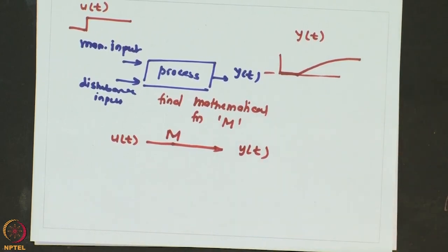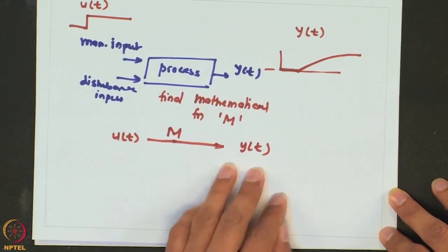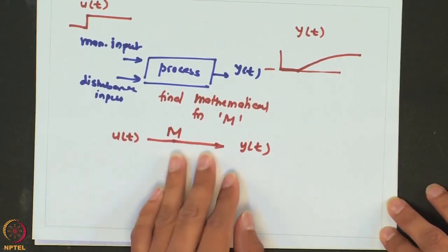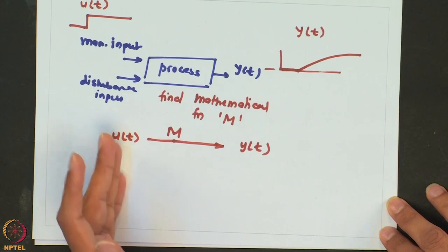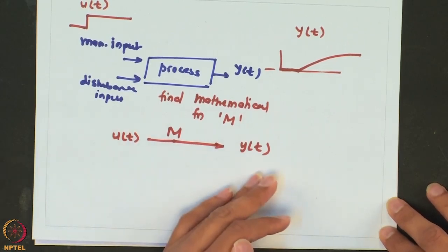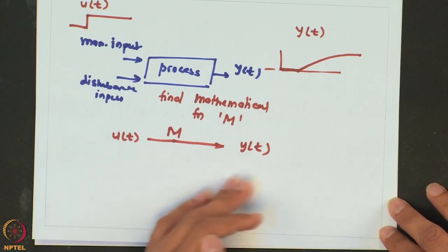We do not need to necessarily know what is inside the process — what kind of equipment is there or what physical laws it follows. All we are interested in is giving some change in the input, recording the output, and finding what mathematical function gives a relationship such that if a particular input is given, the predicted output matches what we observed.